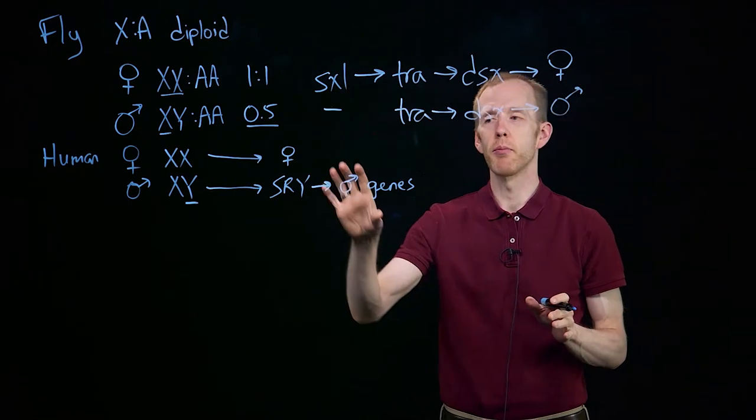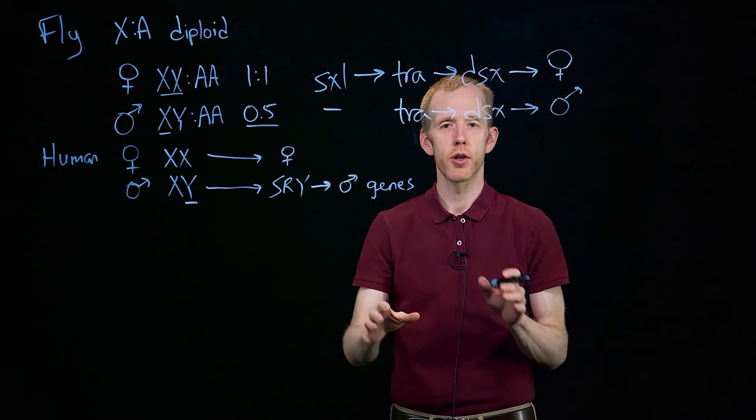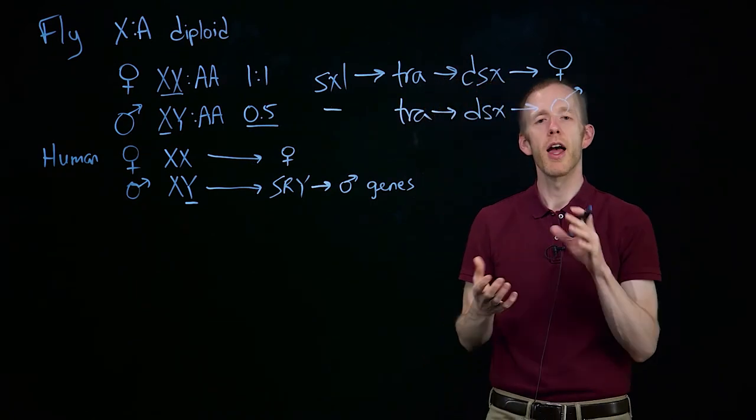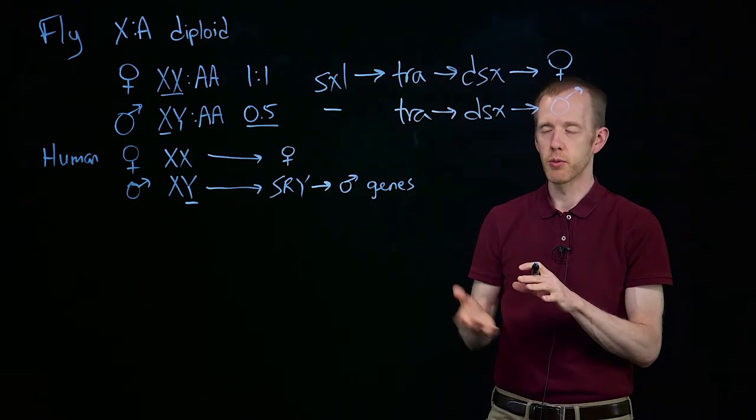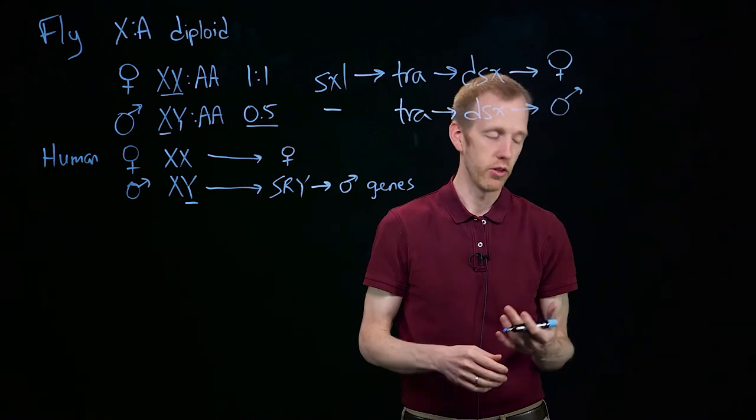So I'd like you to be able to compare and contrast sex determination in flies and humans, and explain how they're similar in terms of how genetics control sex, and yet how they're different.